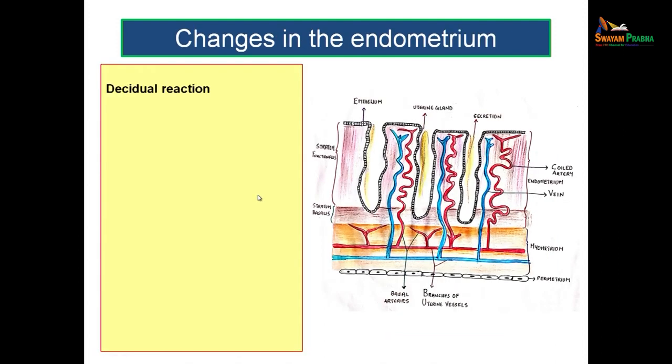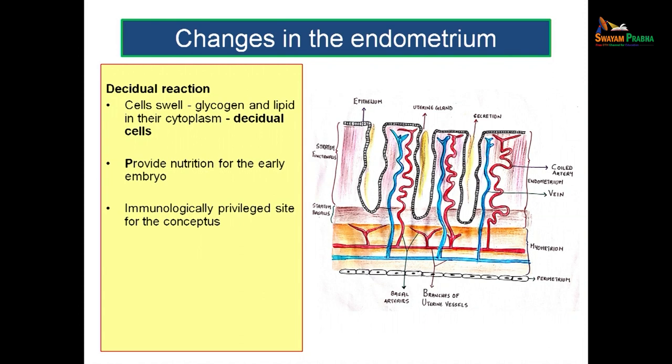After implantation, the endometrium undergoes changes known as the decidual reaction. Endometrial cells swell due to deposition of glycogen and lipid in their cytoplasm; such cells are known as decidual cells, providing nutrition to the early embryo. This region is considered an immunologically privileged site for the conceptus — though the fetus is a foreign body, this reaction prevents it from being expelled.